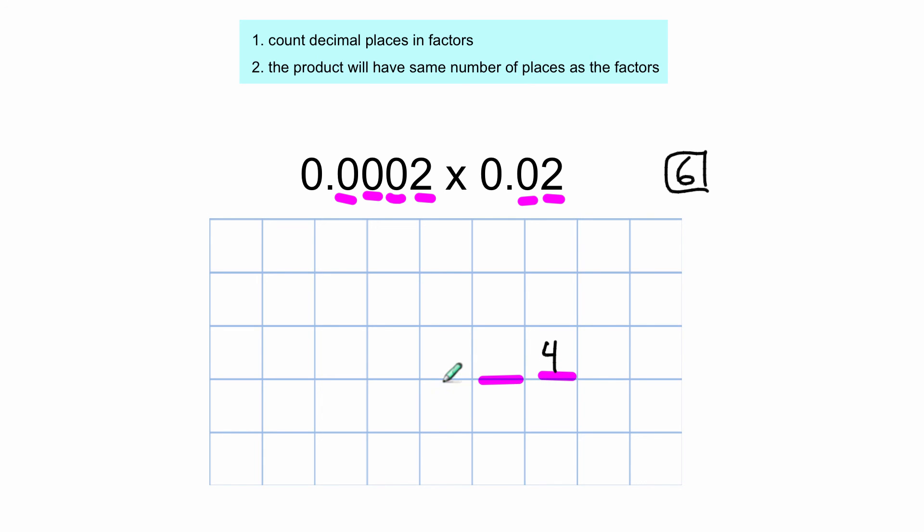And go over one space, two spaces, three spaces, four spaces, five spaces, six spaces, and put the decimal.